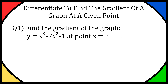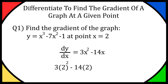Hey everyone, so today I'm going to teach you how to differentiate an equation to find the gradient of a graph at a given point. We have question number 1: find the gradient of the graph y equals x cubed minus 7x squared minus 1 at the point where x equals 2. So let's first differentiate: dy over dx is going to be equal to 3x squared minus 14x. From here, we sub in x equals 2: 3 times 4 minus 14 times 2 gives us 12 minus 28, which equals minus 16. So minus 16 is the gradient at that point on the curve.